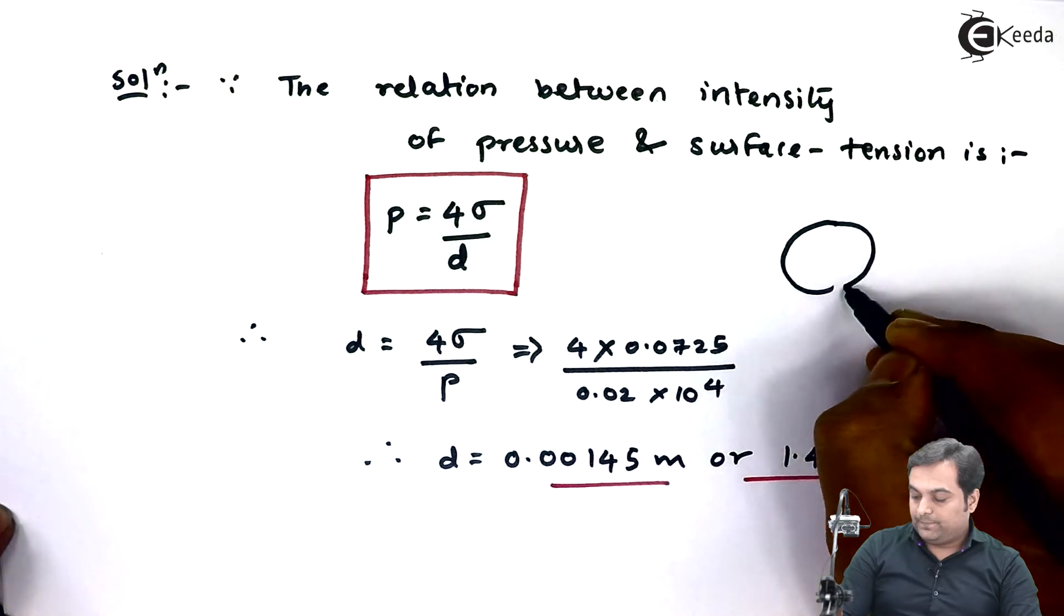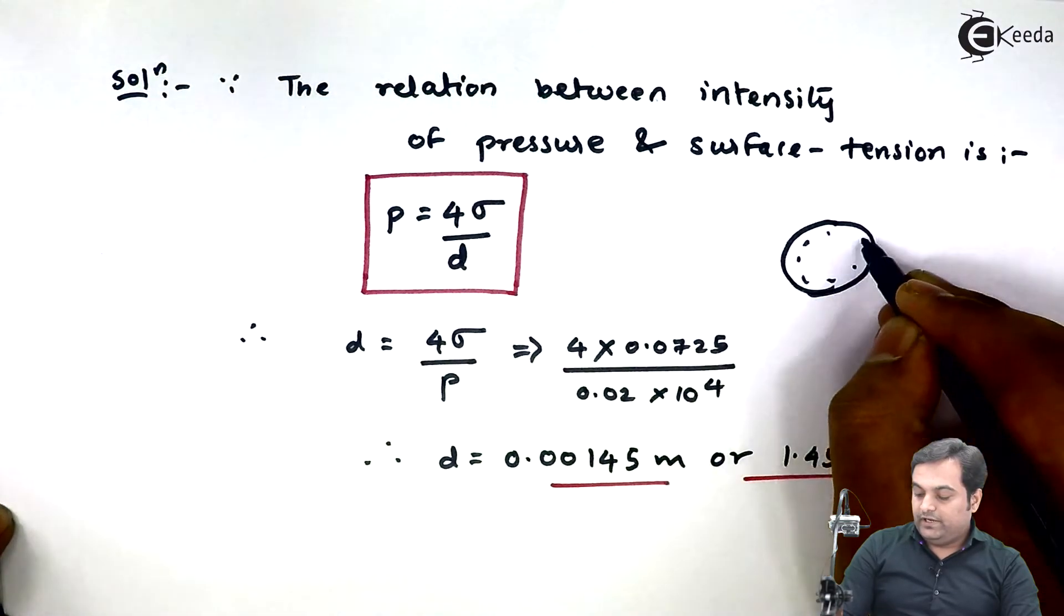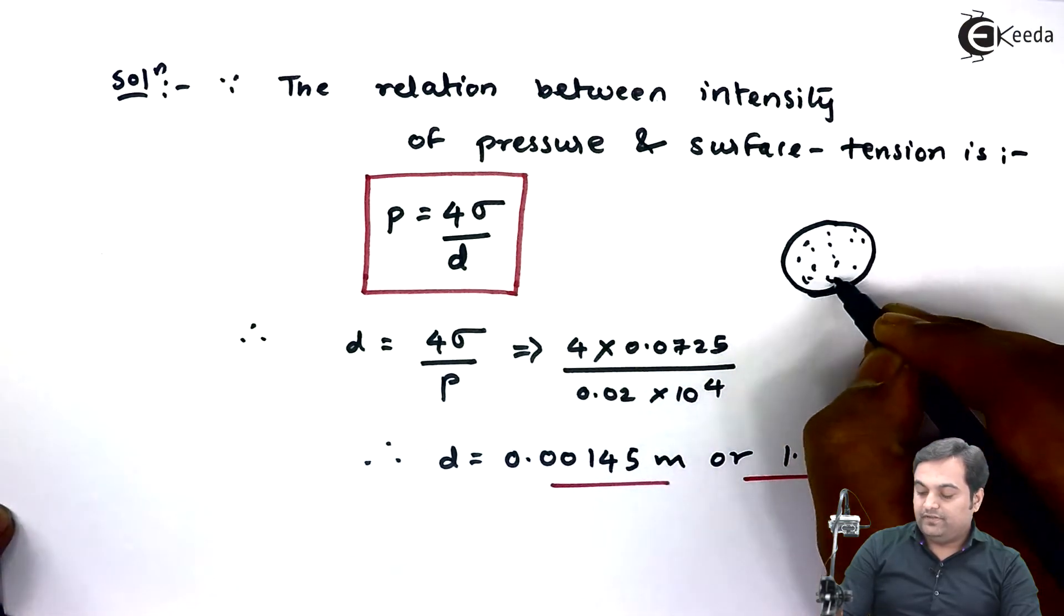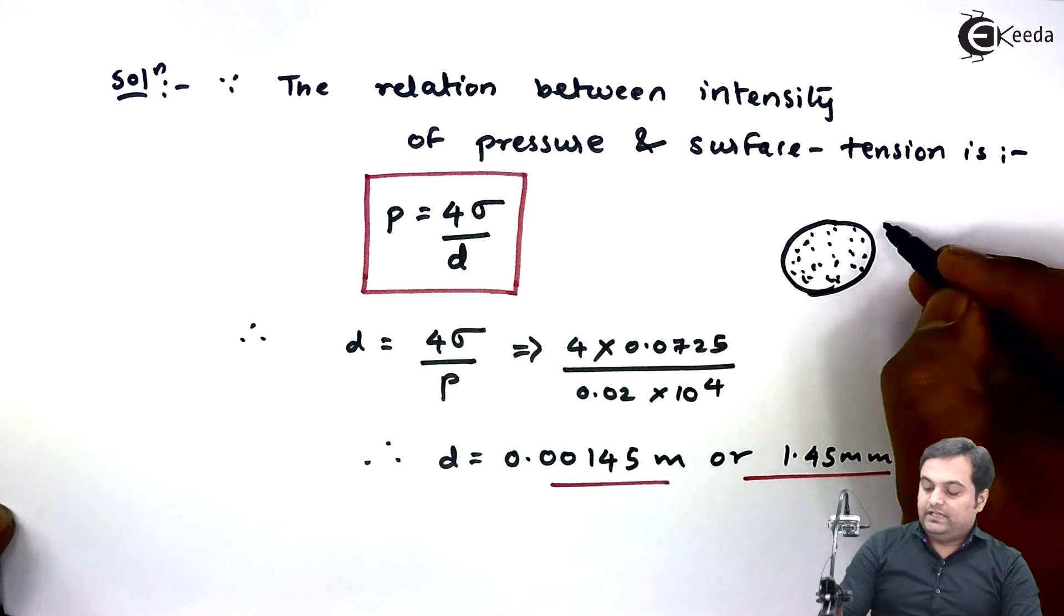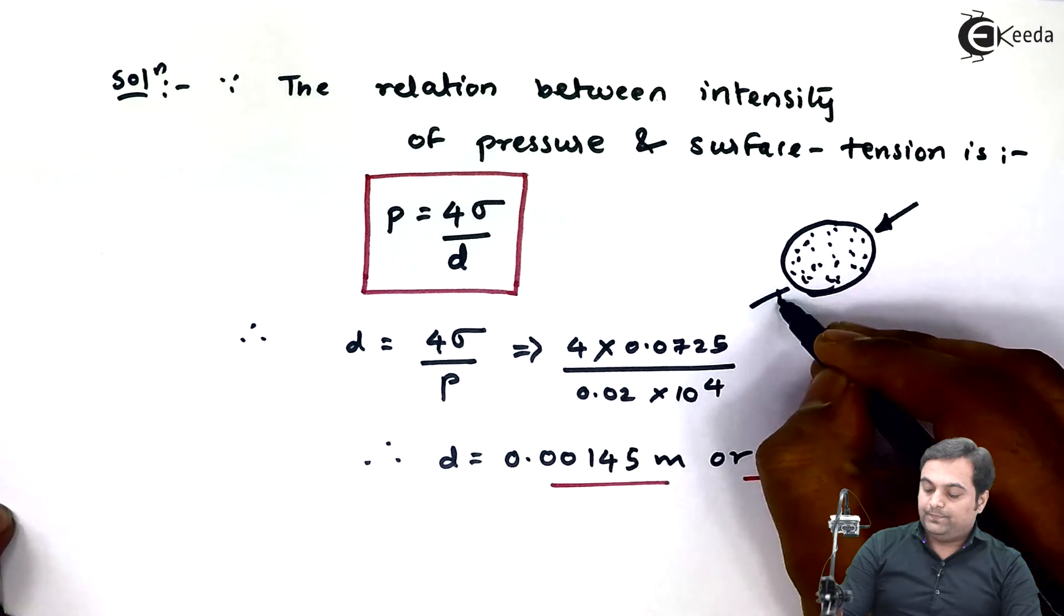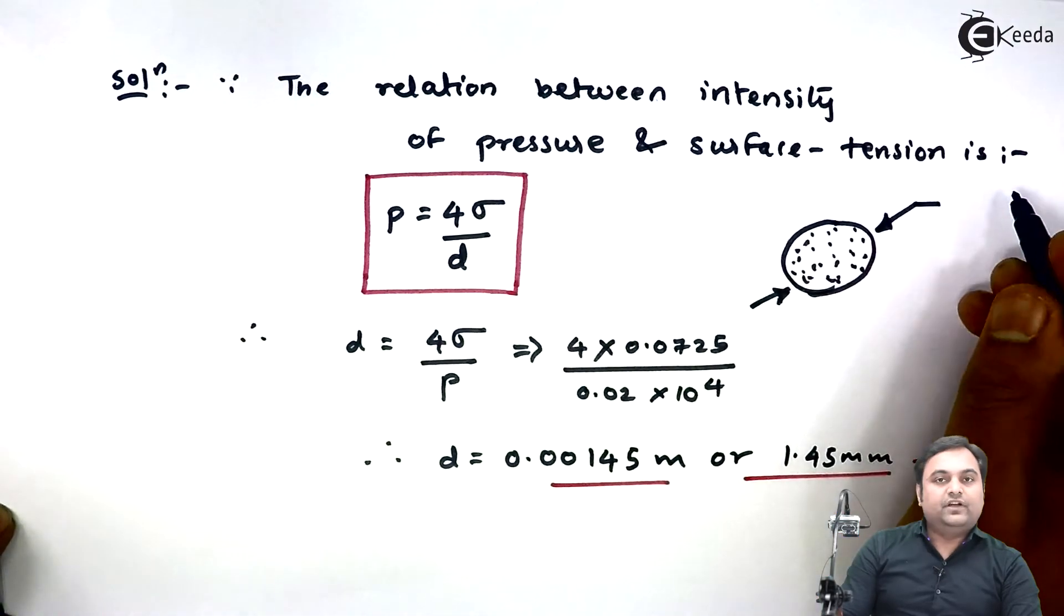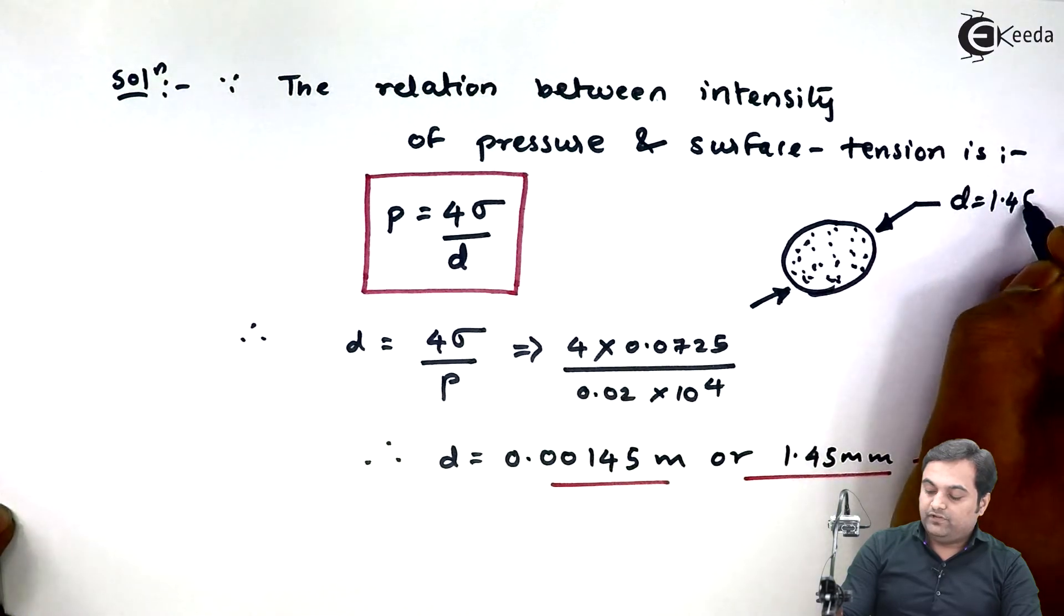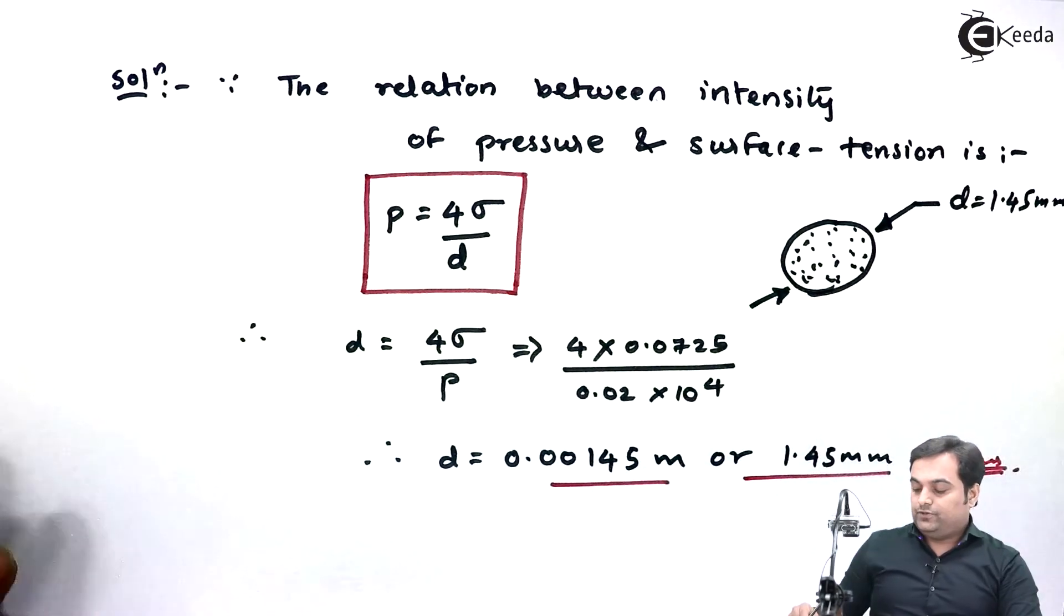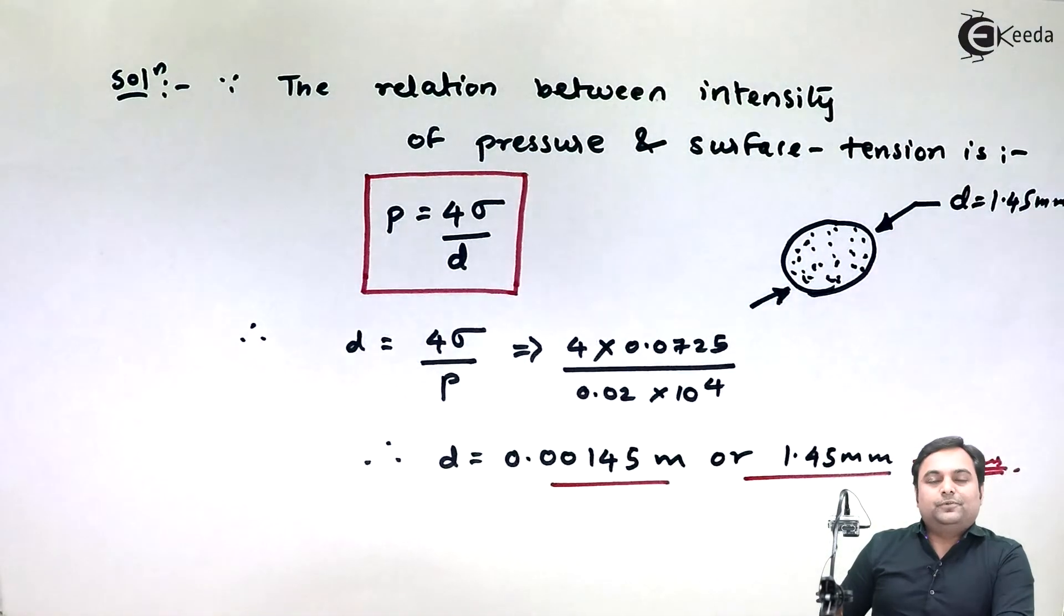having a water droplet whose internal pressure was given inside that water droplet, and we had to calculate the diameter of this water droplet when the surface tension value was known. The diameter is 1.45 mm. So with this we complete the problem.